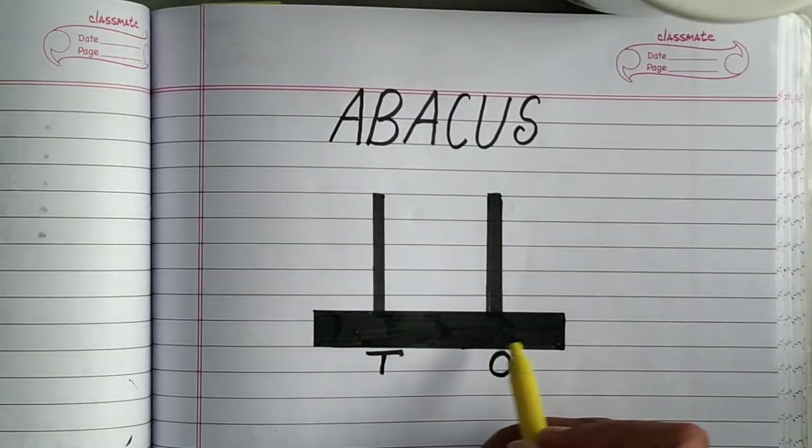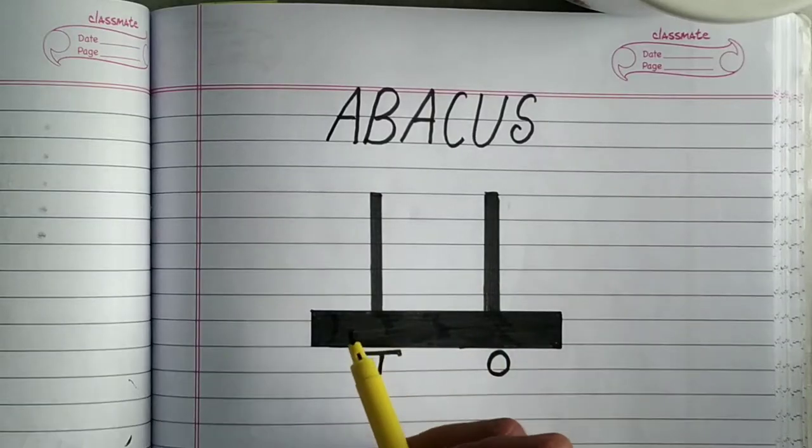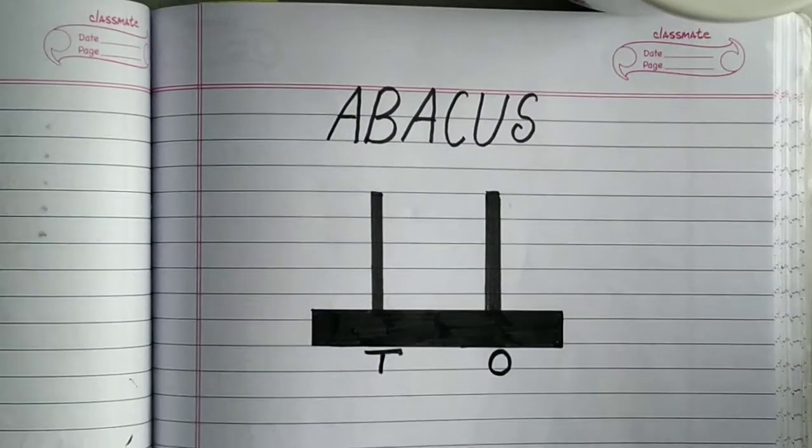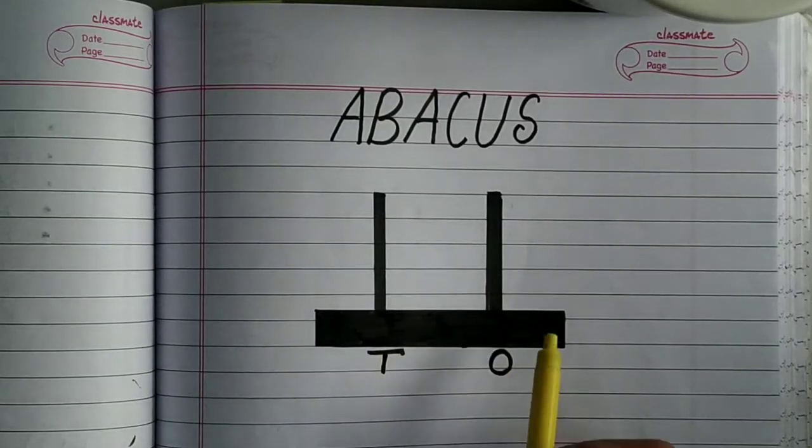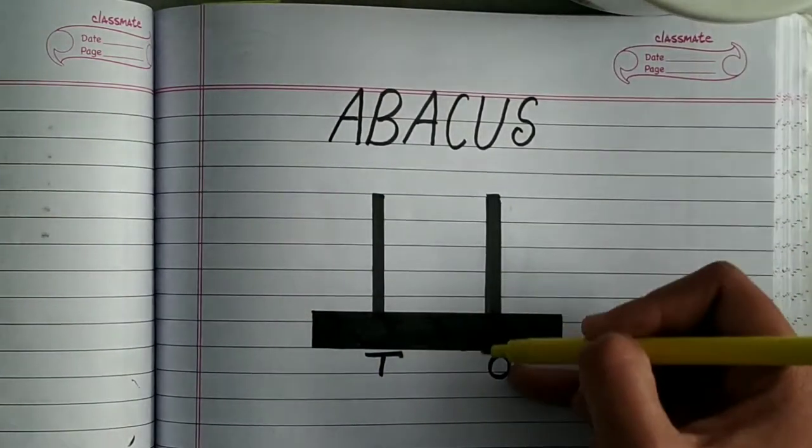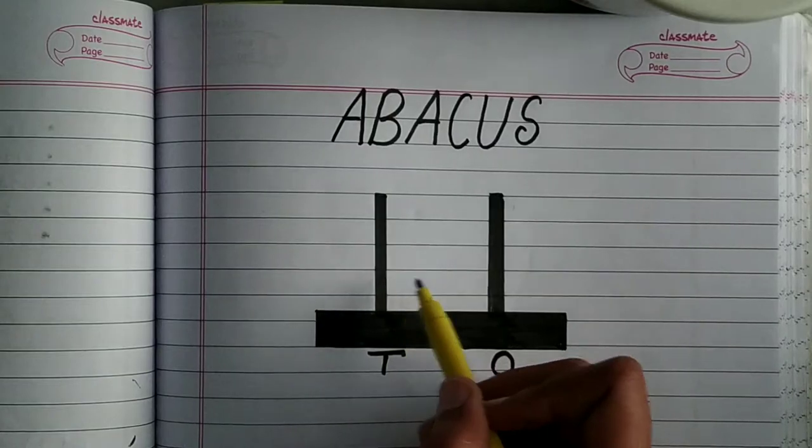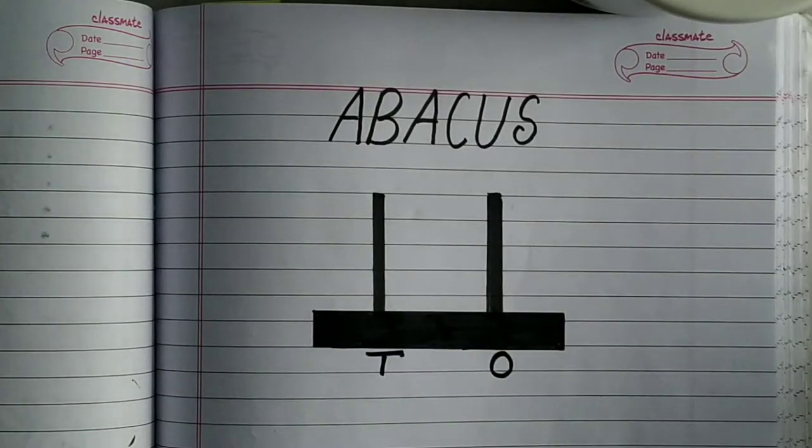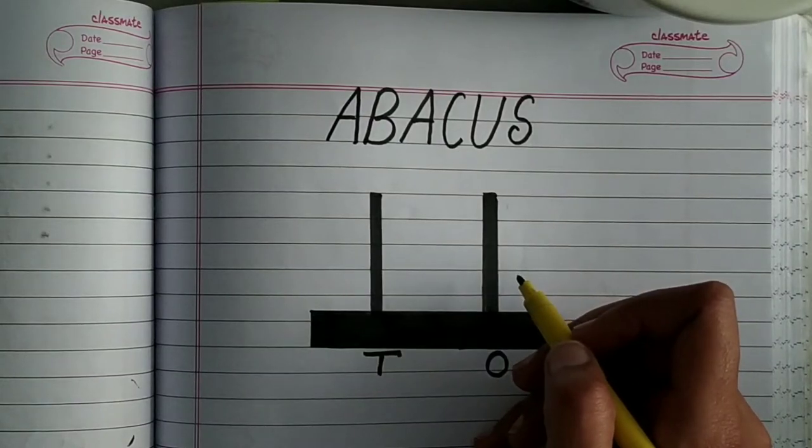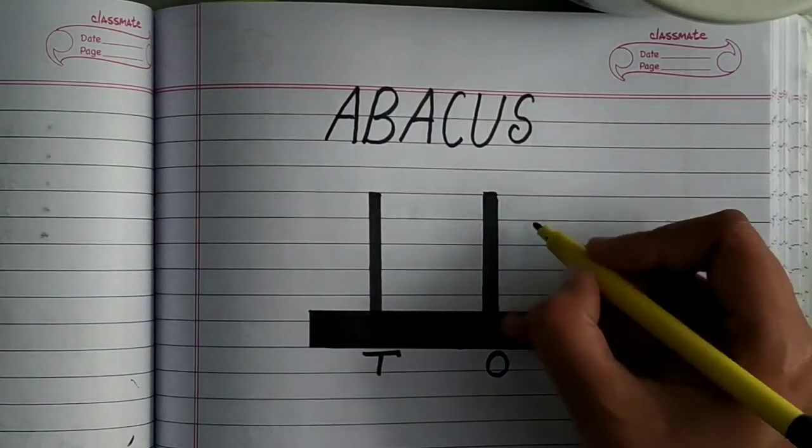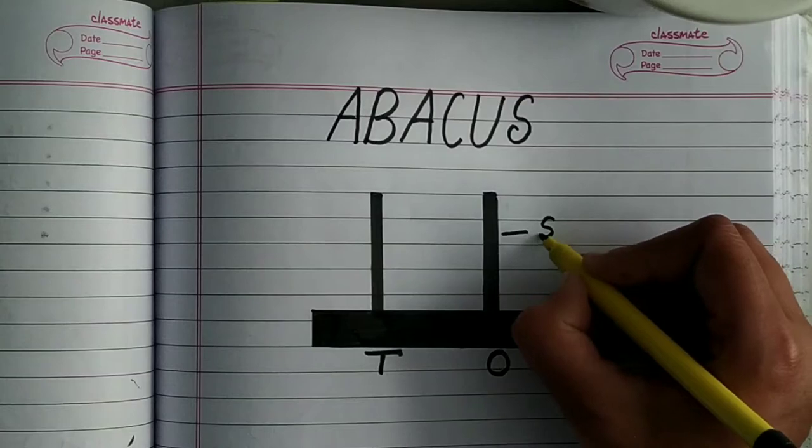Abacus is like this. There is a base on which two rods are standing. There is one and two. Two rods are there. These rods are known as spikes. So this is known as spikes.